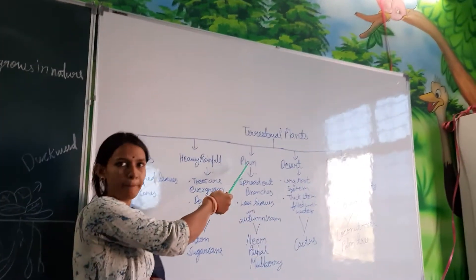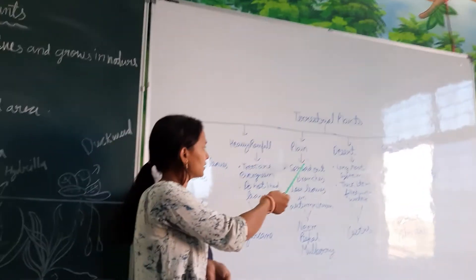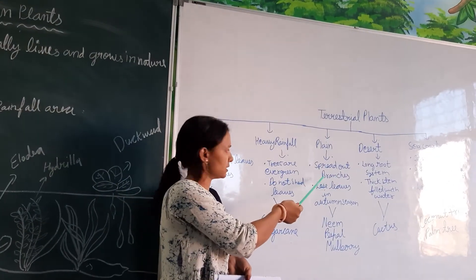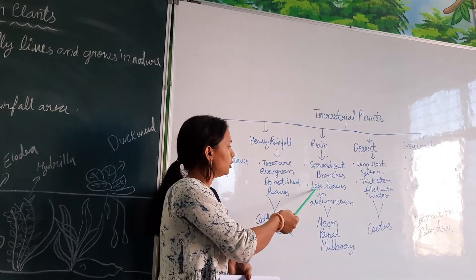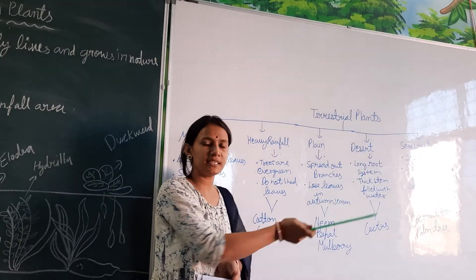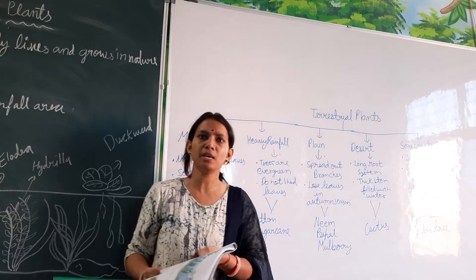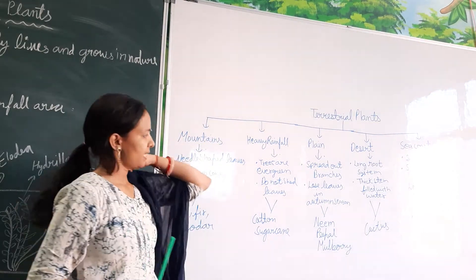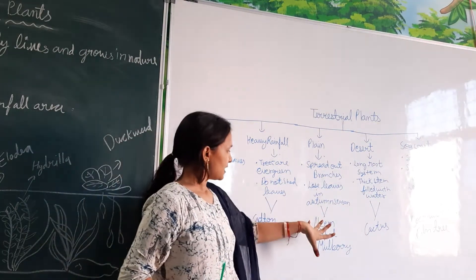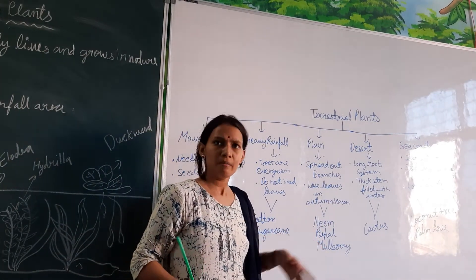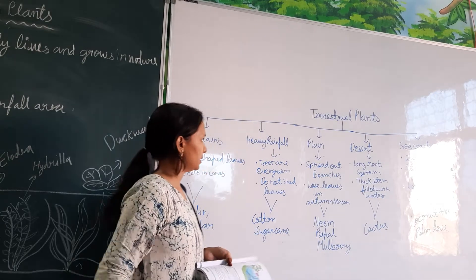Next, plants on plain areas. These spread out branches and lose their leaves in the autumn season. Examples are neem and mulberry trees.